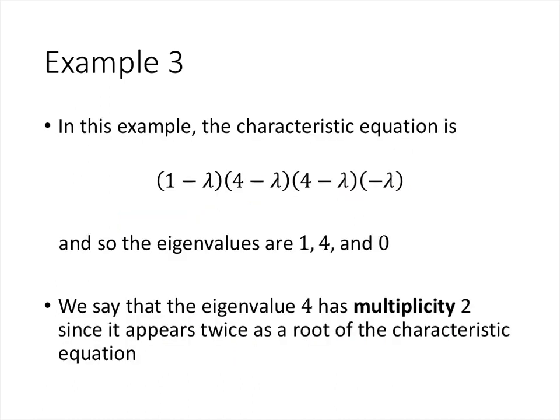Notice that we get the eigenvalue 4 twice — the factor (4 minus lambda) appears twice in the factored characteristic polynomial. We say that eigenvalue 4 has multiplicity 2. Our 4 by 4 matrix has a degree-4 characteristic polynomial, so we expect 4 roots. This polynomial does have 4 roots if we count the root 4 twice.